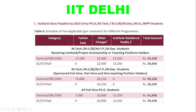For the MTech course, the fees are organized column-wise: tuition fees, other charges, institute residence fee, and their total. For General, OBC, and EWS students, the tuition fee is ₹17,500, and other charges are ₹22,400 — I'm not sure exactly what is included in those other charges, hopefully you'll find out when you join. The institute residence fee is around ₹13,250, and adding all three together comes to around ₹53,150.